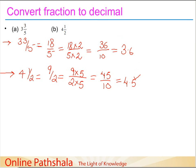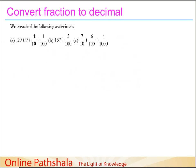Now let's move beyond tenths to examples where we also need to consider hundredths. Here we have a denominator involving hundreds. Consider 20 + 9 = 29, plus four-tenths, plus one-hundredth.